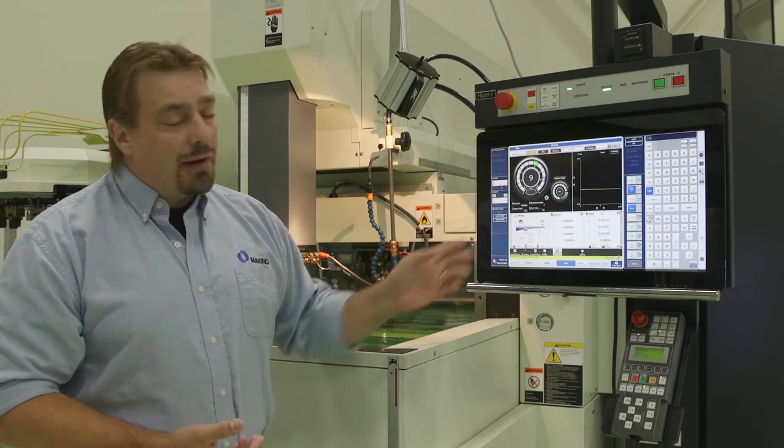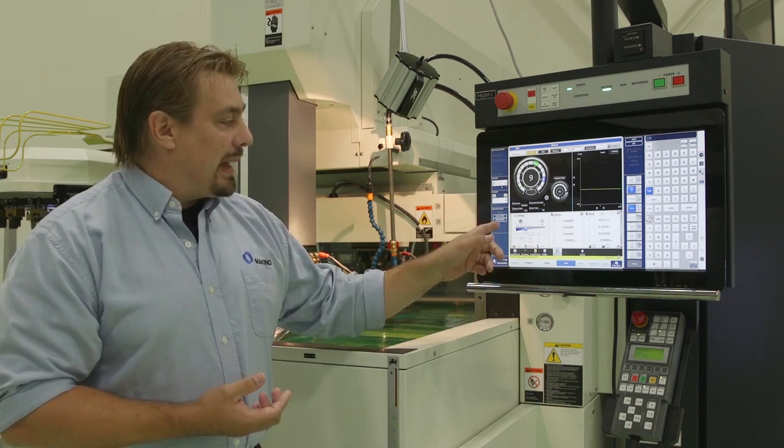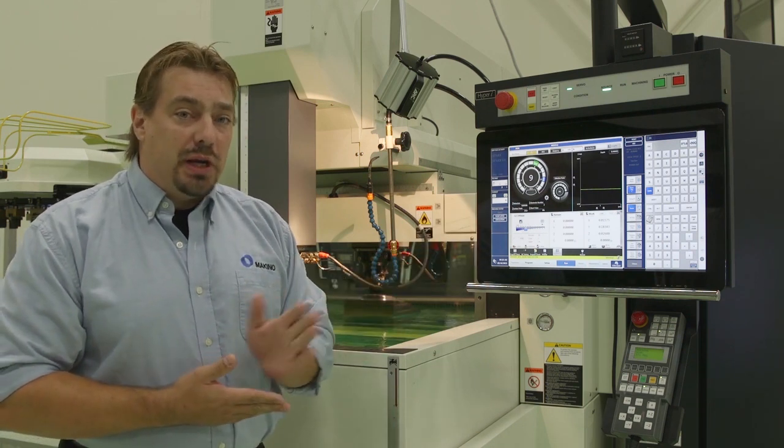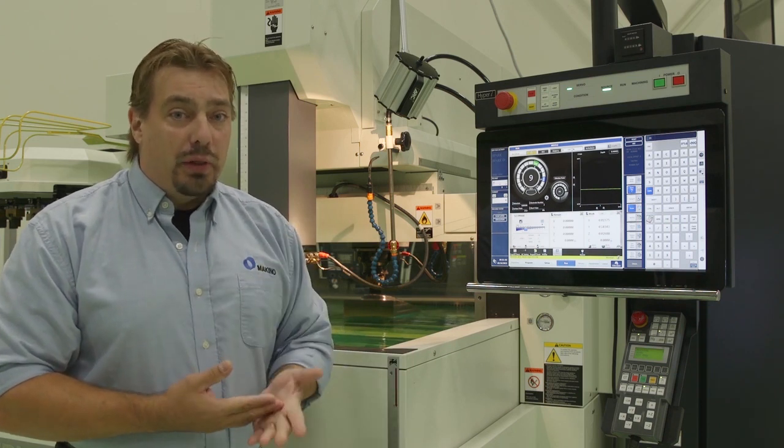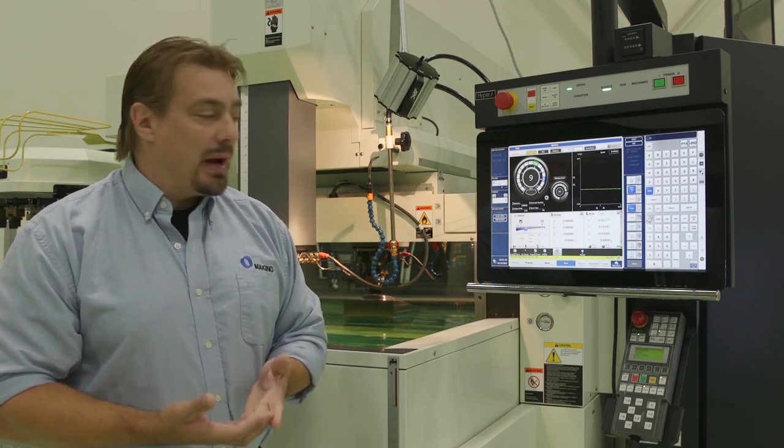So for example, we have our easy cut function, which allows the operator to raise or lower the machining speed, maybe to improve stability of the cut, which will reduce cycle time.